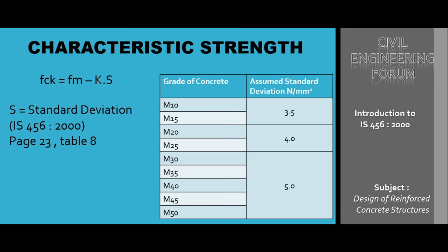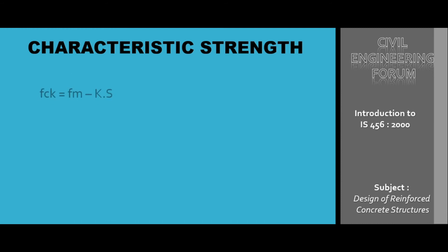Table 8 has two columns: grade of concrete and assumed standard deviation. If the grade of concrete is M10 to M15, the standard deviation is 3.5. For M20 to M25, it is taken as 4. For M30 to M50, it is taken as 5. So now we are clear with the standard deviation. Next, we'll talk about the risk factor k.